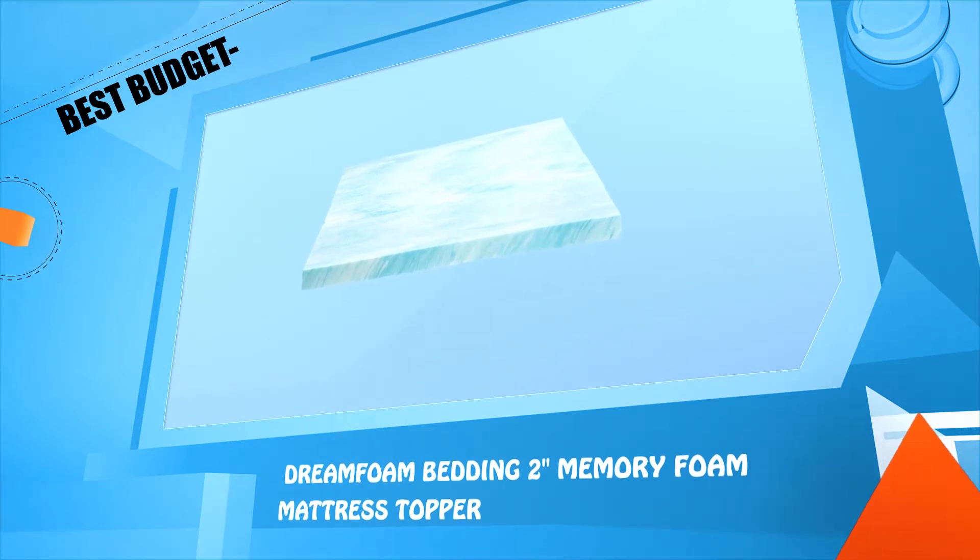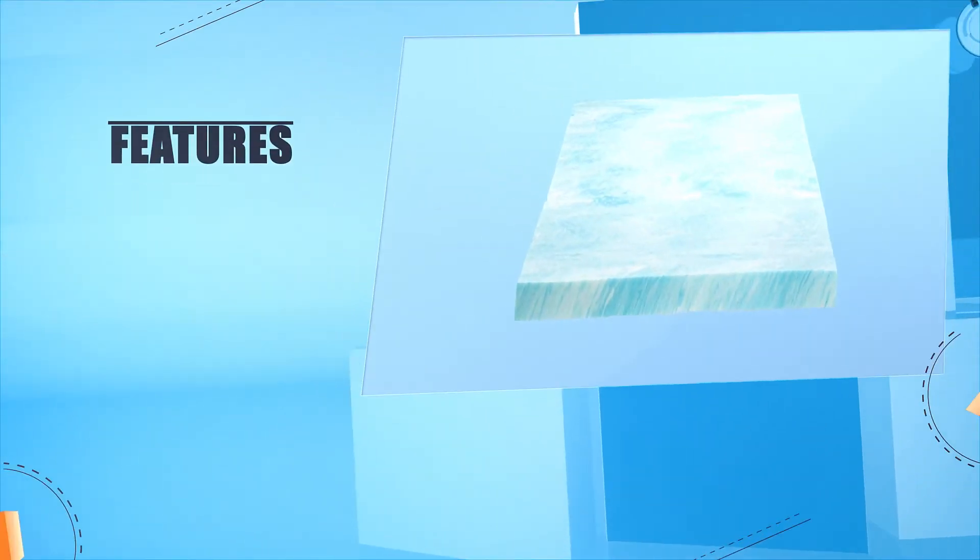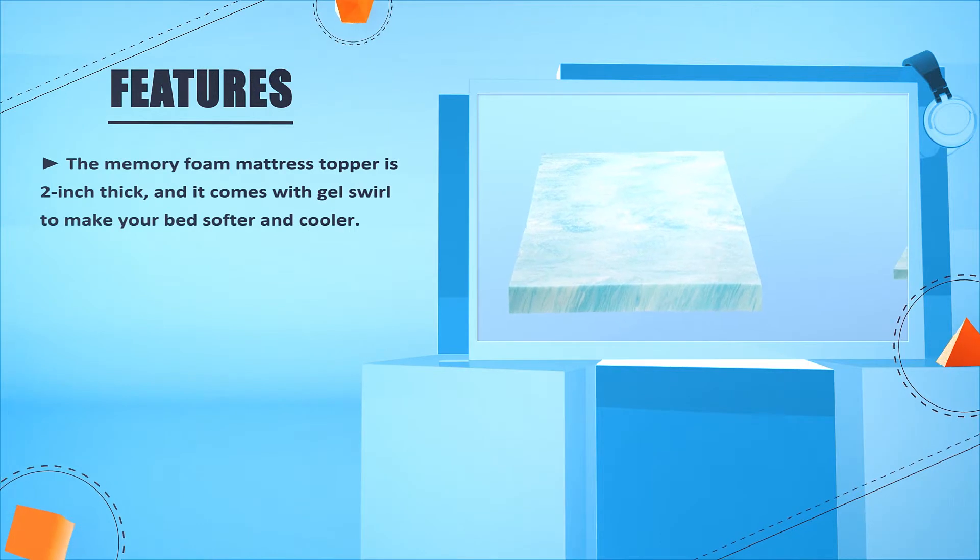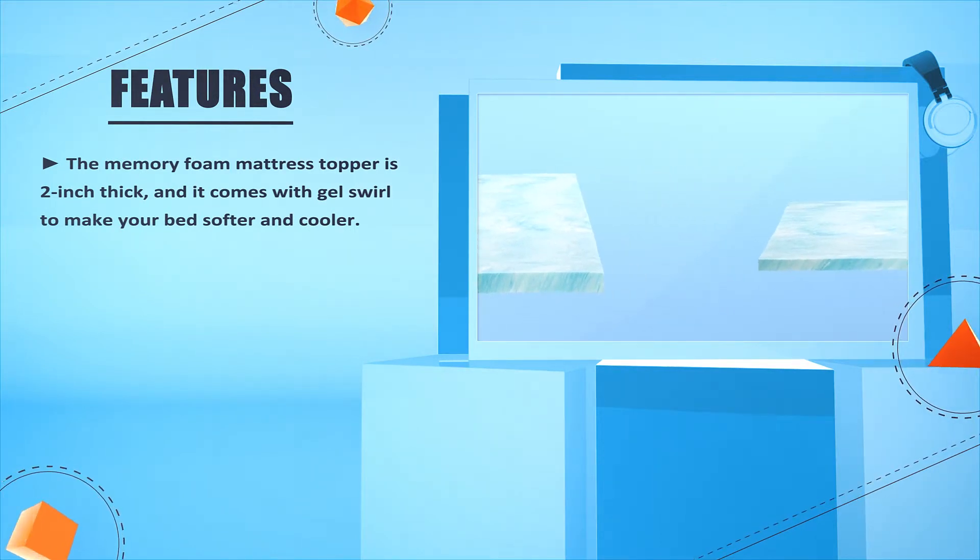Dream Foam Bedding 2 inches memory foam mattress topper. The memory foam mattress topper is two inches thick and it comes with gel swirl to make your bed softer and cooler.